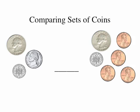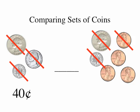Let's compare sets of coins. To compare sets of coins, first count each set, starting with the coin with the largest value. 25, 35, 40. The first set is 40 cents. Let's move to the next set of coins. 25, 35, 36, 37, 38, and 39. 40 is greater than 39, so 40 cents is also greater than 39 cents. We must use the greater symbol.